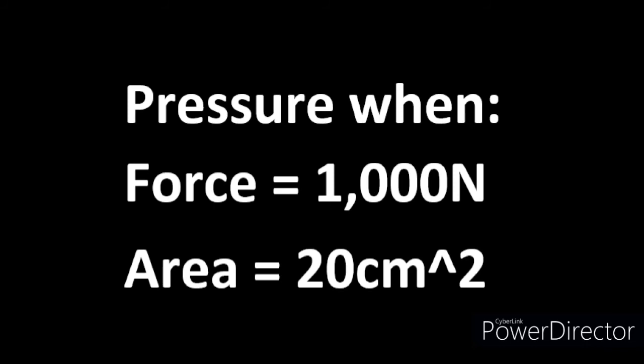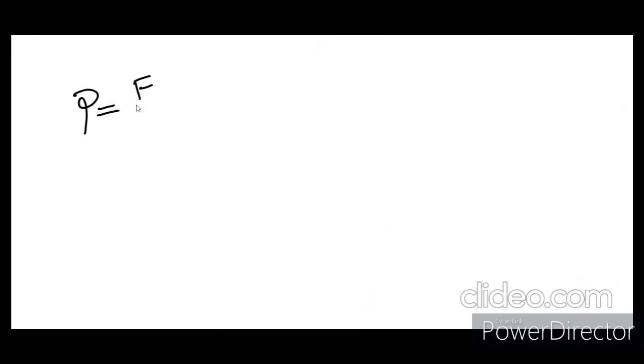So the first thing you should do, the first thing even I always do, write out the equation: pressure equals force over area. Then you'd substitute your values in. Now you get pressure equals 1000 newtons over 20 centimeters squared. We do some math and we eventually arrive at pressure equals 50 newtons per centimeter squared.